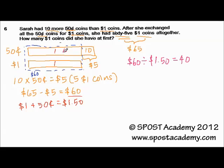That is to say, this model represents 40, and this also represents 40. So the question asks, how many $1 coins did she have at first? The answer would be 40.